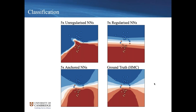Everything discussed so far covers regression — predicting a scalar value like a person's height or time to an event. On the other hand you might have binary classification problems: is someone healthy or not, does a machine need fixing or not. We've shown that the anchored ensemble can equally be applied to classification as well as regression. Again, unregularized overfits, regularized converges to the same solution, and our anchored neural nets compare well to the ground truth.